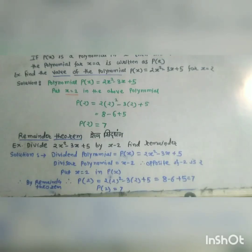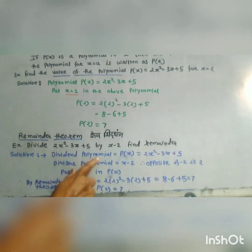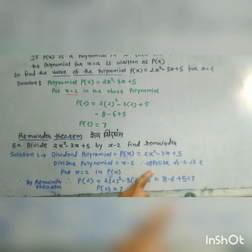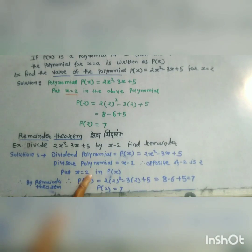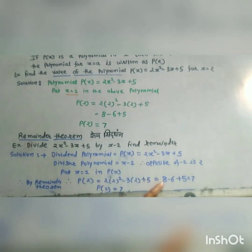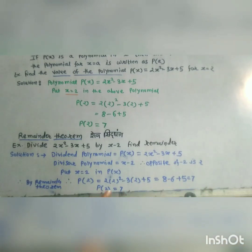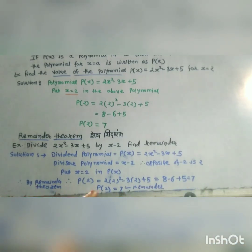Remainder theorem: divide 2x squared minus 3x plus 5 by x minus 2 and find the remainder. By the remainder theorem, put x equal to 2 in p(x): p(2) equals 2 into 2 squared minus 3 into 2 plus 5 equals 8 minus 6 plus 5 equals 7. Therefore the remainder is 7, confirming that the remainder equals the value of the polynomial.